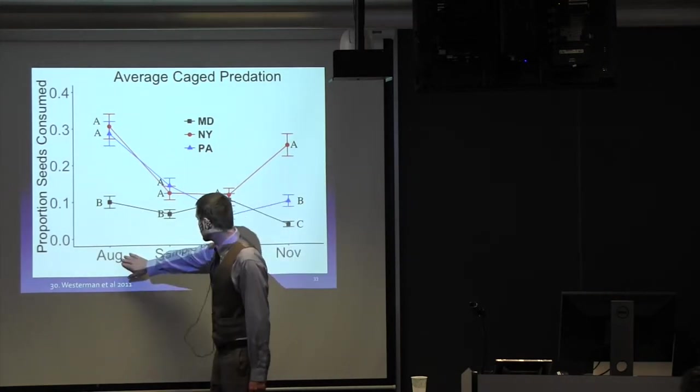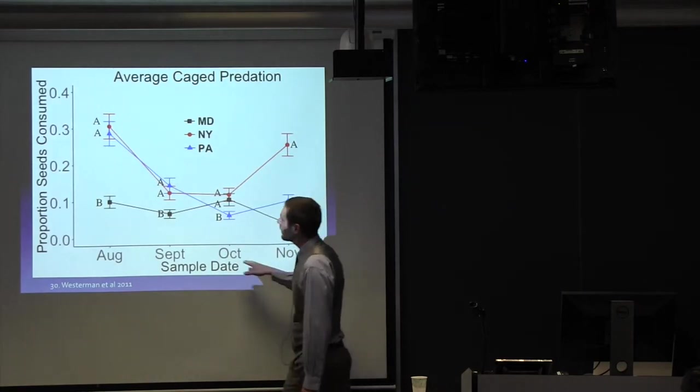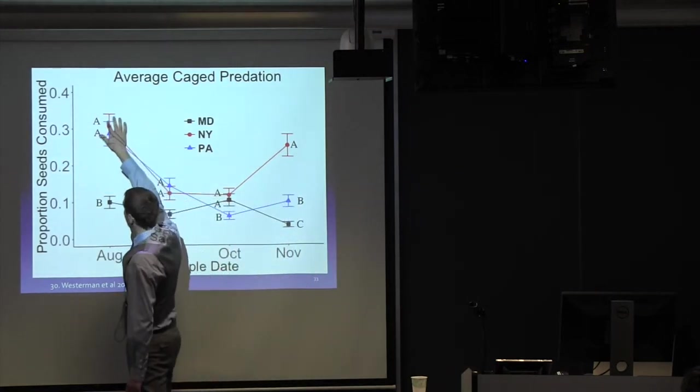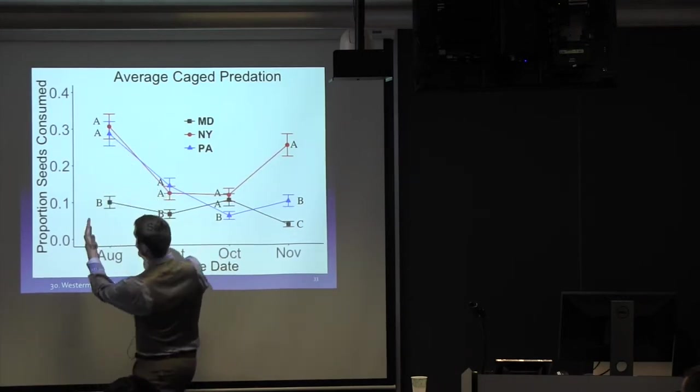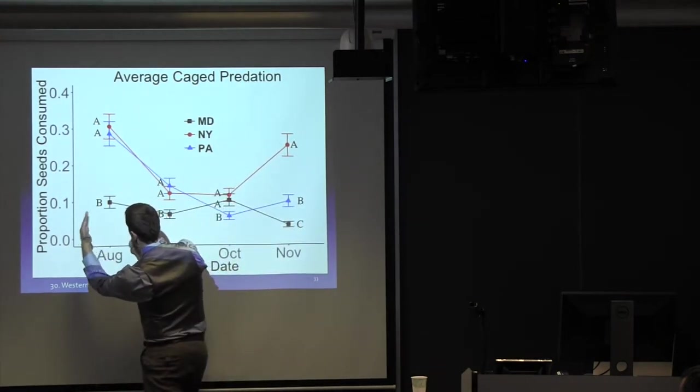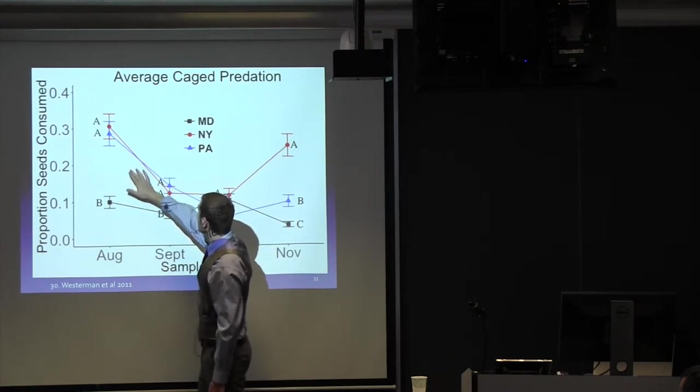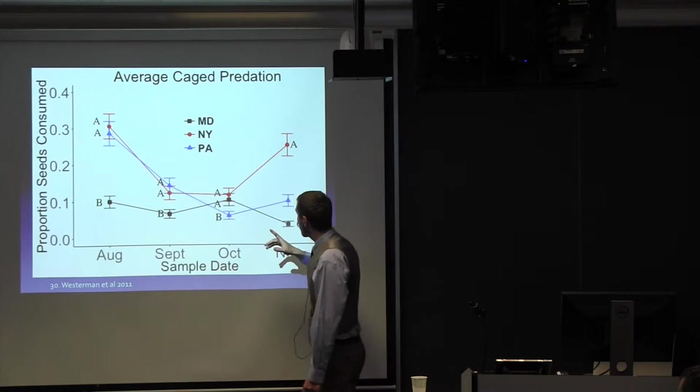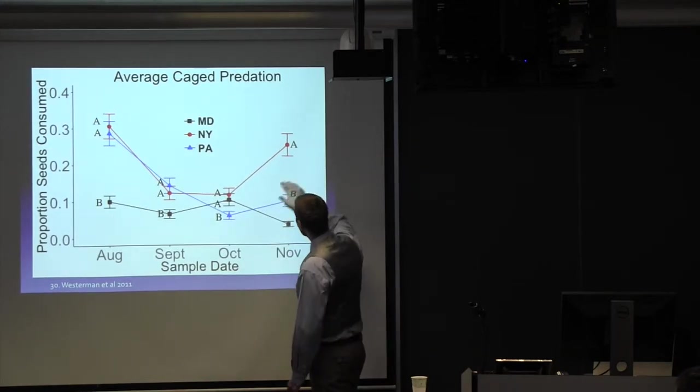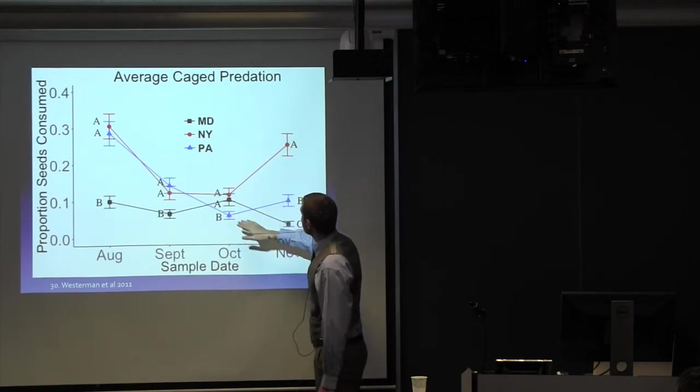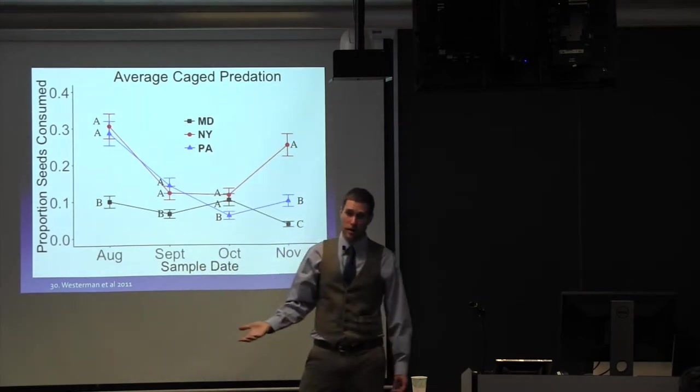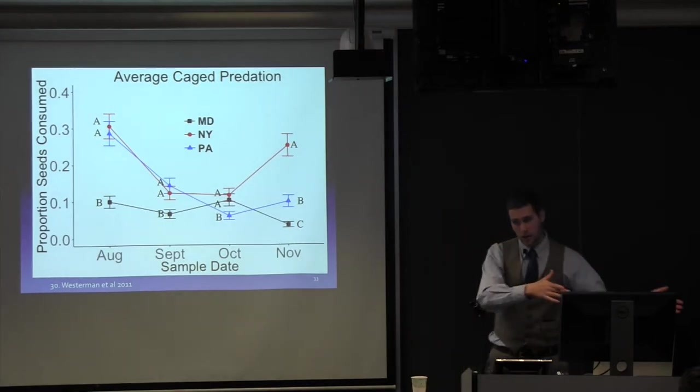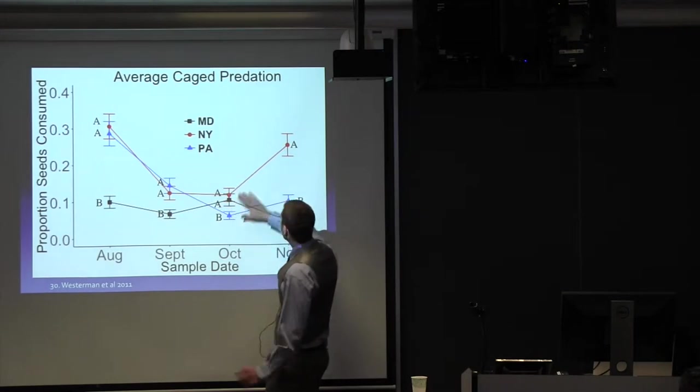So here we have our sample dates, August, September, October, November, and the proportion of seeds consumed. These are closed arenas, so the ones with cages. The letters show significant difference, but only in that date. We're not comparing across dates, we're comparing between sites at each date. So we have Maryland, New York, and Pennsylvania is blue. So we see that at least in New York and Pennsylvania, it changed over time. And the one bit I really was interested to see was, it's more pronounced in New York, but a little bit in Pennsylvania here, where there's a bit of an uptick in seed predation. And this has been noted before. Westerman et al. found that when you grow crops that are phenologically late and provide cover late into the fall, you'll typically see the same pattern of an uptick in seed predation.